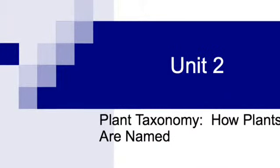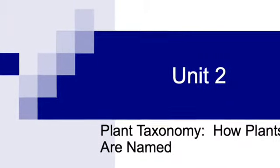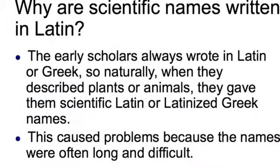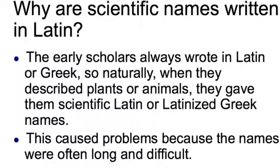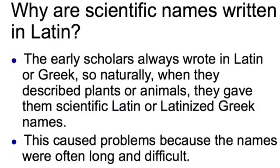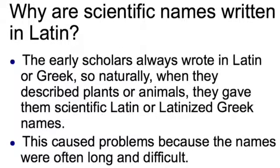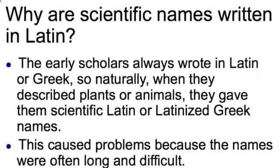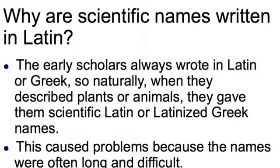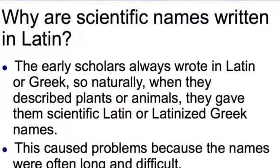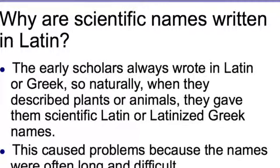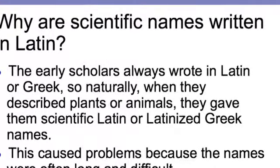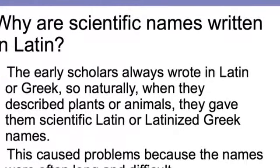This unit deals with plant taxonomy and how plants are actually named. To do this we need to go back and figure out why plants have funny names when we look at their scientific name. Many scientific names are written in Latin. The early scholars used Latin and Greek as their language, so that's what they used. The problem became that the names were really long and difficult to pronounce, and people had a hard time figuring out what the scholars were referring to.